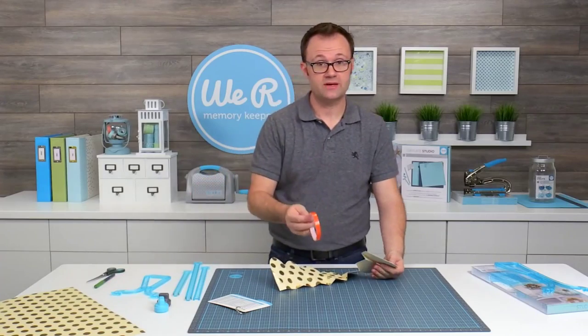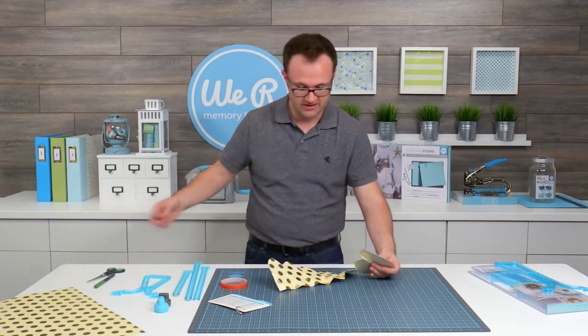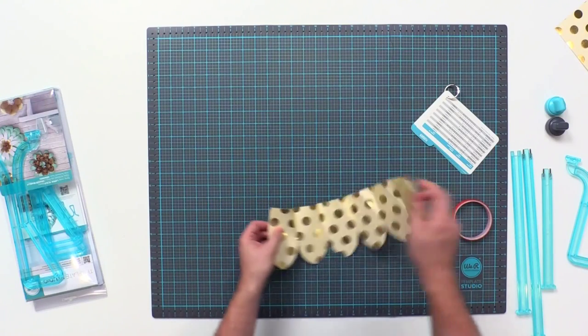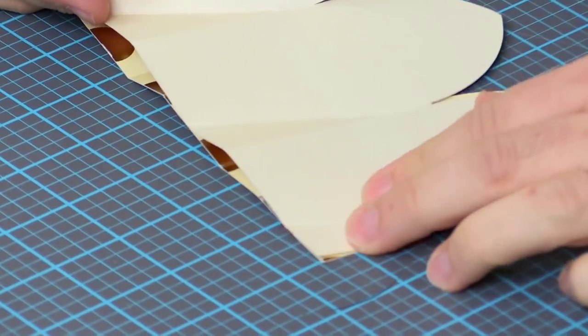To glue it together, I like to use a permanent adhesive such as this red tape. I have some pre-cut strips here, and I'm just going to place it here on this triangular piece. And then you can align it like this. And that's how you line it up together.